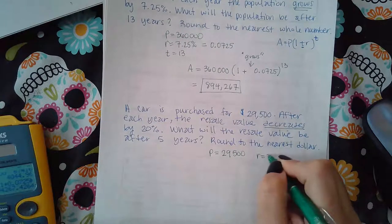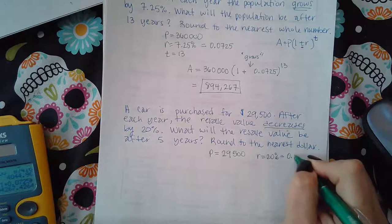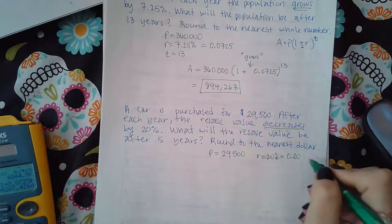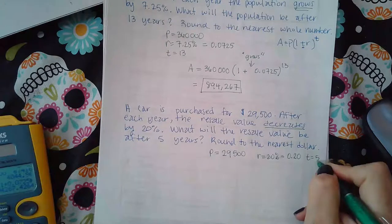Then, my rate is the 20%, which as a decimal is 0.20. And then, my T is five years.